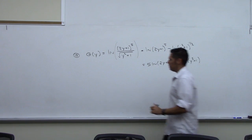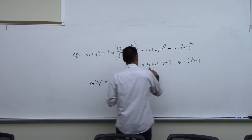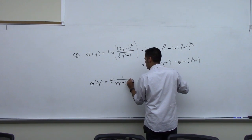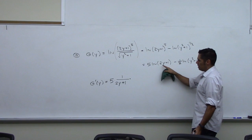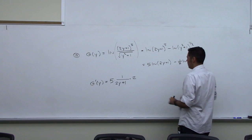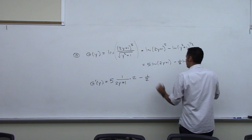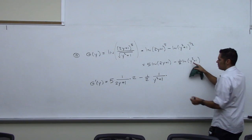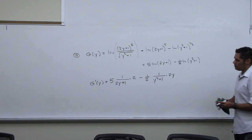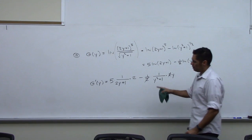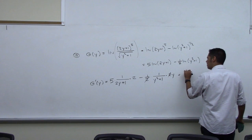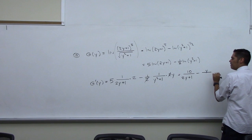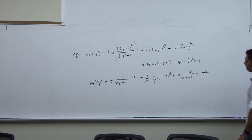Now I'll go ahead and take the derivative. G prime of y: the 5 is going to come along for the ride. Derivative of natural log of something is 1 over that something, times the derivative of what's inside — since y is like x, the derivative of 2y is just 2, and derivative of 1 is 0. I can cancel the 2s. I can put the 2 and the 5 together to get 10, so I get 10 over 2y plus 1. Then minus, and all that's left over here is y on top and y squared plus 1 on the bottom.